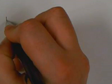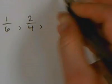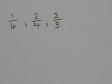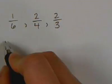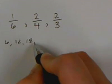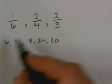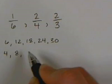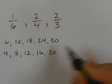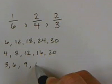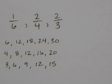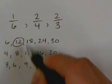Let's look at another example. If I have these three fractions — 1 sixth, 2 fourths, and 2 thirds — and I'm asked to put them in order from least to greatest, first thing I do is ask: are my denominators the same? The answer is no, so we need to make them the same by listing multiples. Multiples of 6: 6, 12, 18, 24, 30. Multiples of 4: 4, 8, 12, 16, 20. Multiples of 3: 3, 6, 9, 12, 15. Our least common multiple, or least common denominator, is 12.